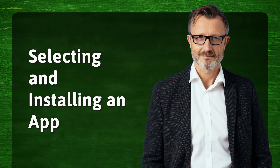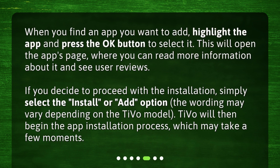Selecting and Installing an App. When you find an app you want to add, highlight the app and press the OK button to select it. This will open the app's page, where you can read more information about it and see user reviews. If you decide to proceed with the installation, simply select the Install or Add option — the wording may vary depending on the TiVo model. TiVo will then begin the app installation process, which may take a few moments.